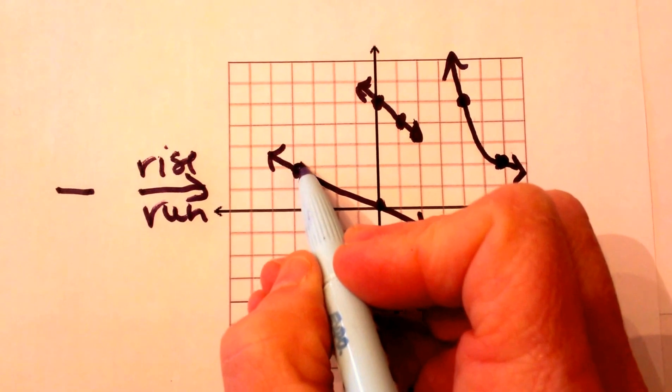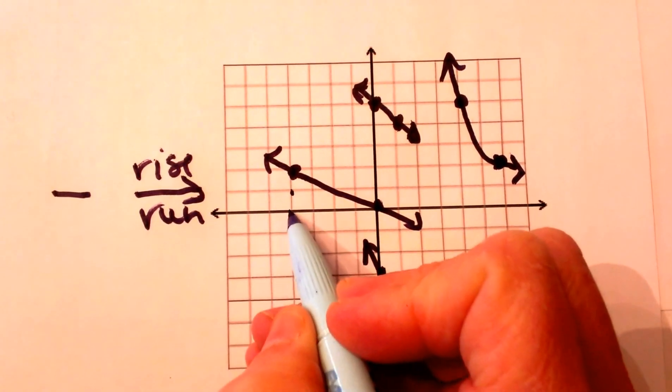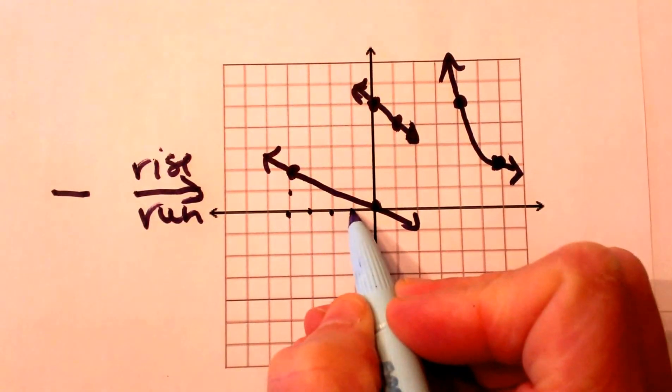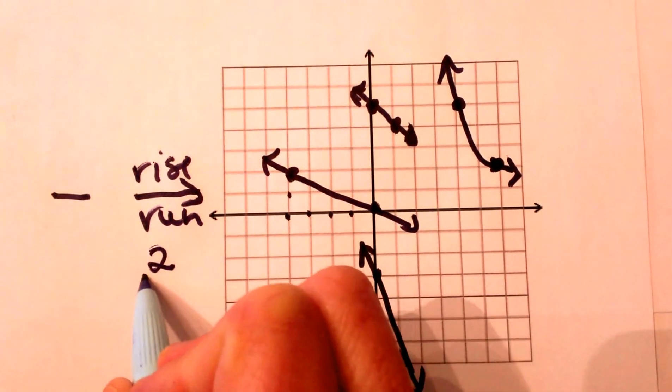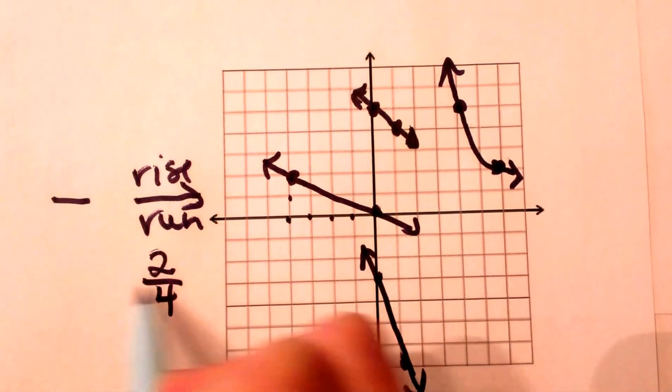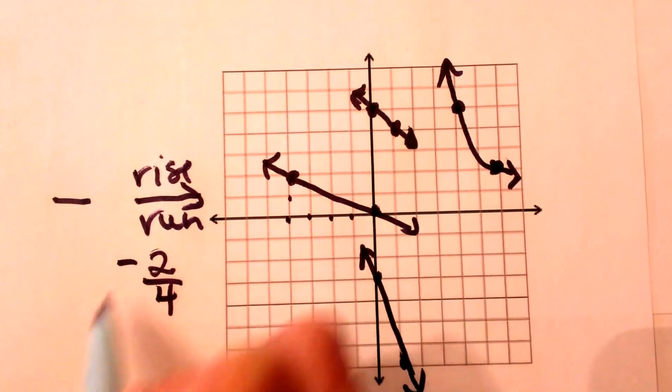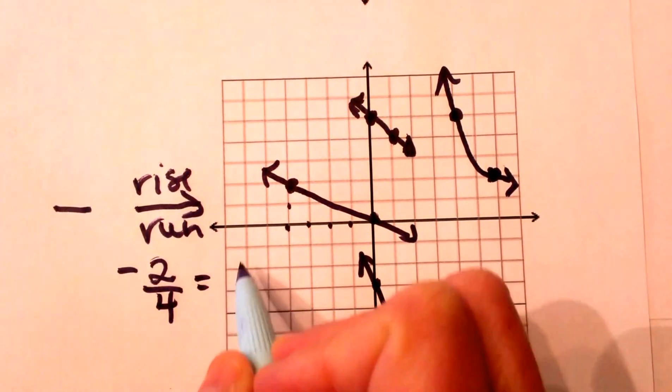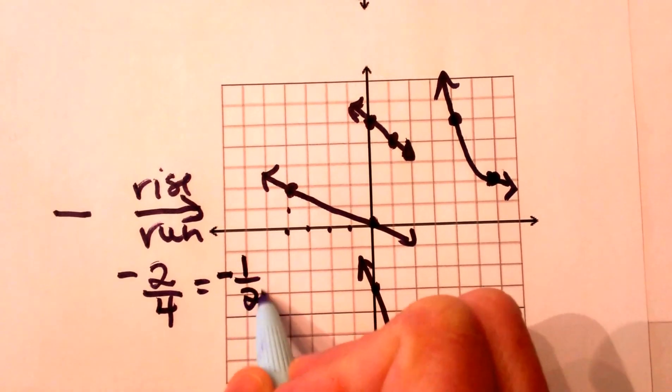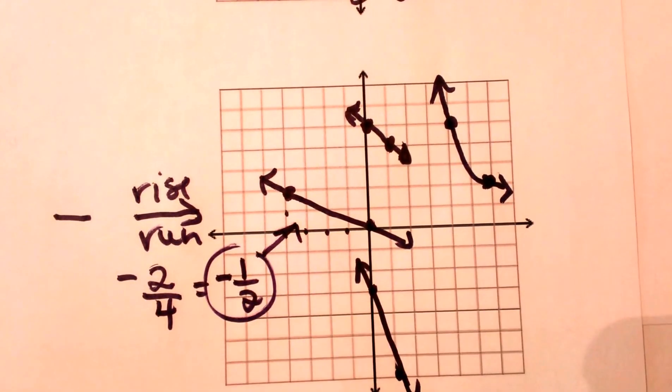So let's go through a couple of these, we've got a rise of 1,2 over 1,2,3,4, so this one is a rise of 2, a run of 4, but it's also going down, so we make that slope negative. Now this one reduces, so it's going to reduce by 2, so I'm going to get negative 1 half as the slope of this line.